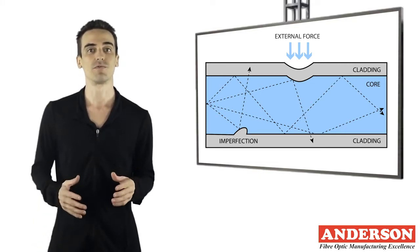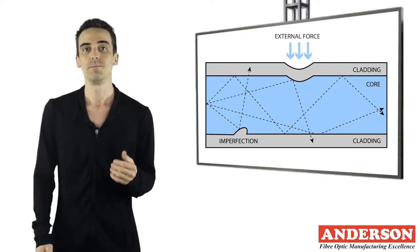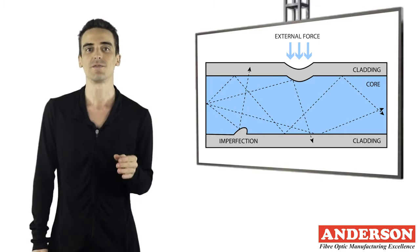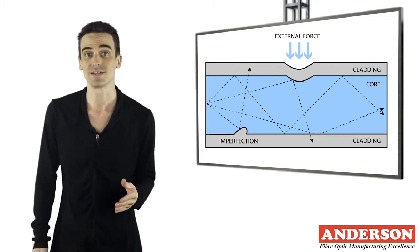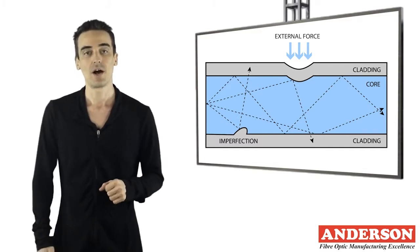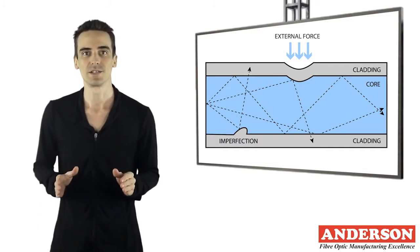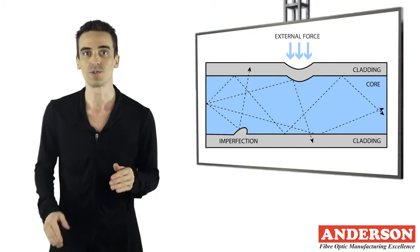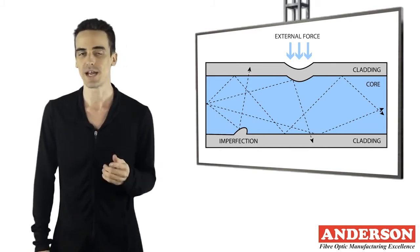Rayleigh scattering, which is responsible for the sky appearing blue. Mi scattering, which causes light in front of a particle to be more intense than the light bouncing off. And waveguide scattering. Of these, Rayleigh is the dominant loss mechanism in the low silica window between 800 and 1700 nanometers.